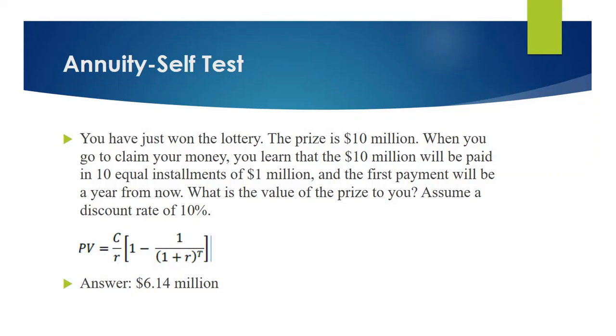You want to know the value of your prize now and assume that your discount rate is 10%. If you use the present value of annuity formula, which is PV equals C divided by R, then bracket 1 minus 1 divided by 1 plus R to the power T, your answer will be 6.14 million. Though your prize is 10 million, the actual value of your lottery is 6.14 million dollars.